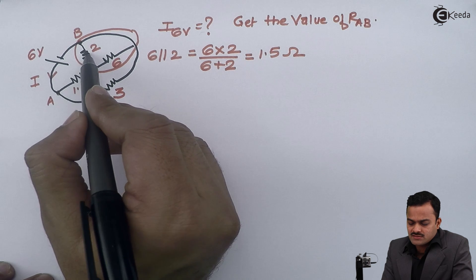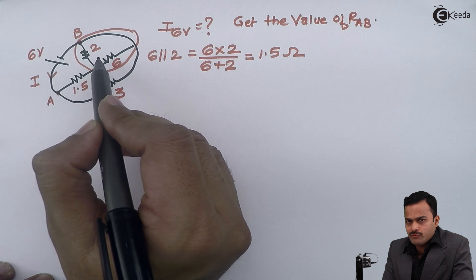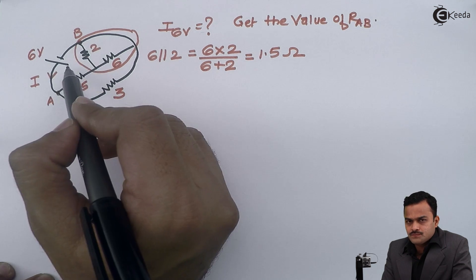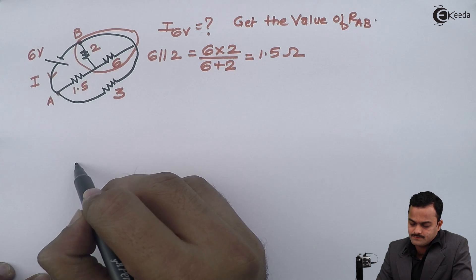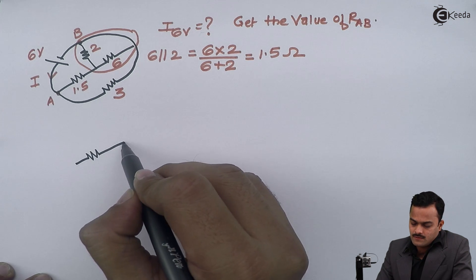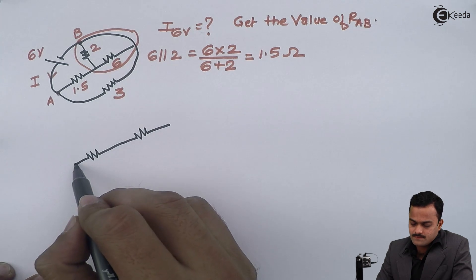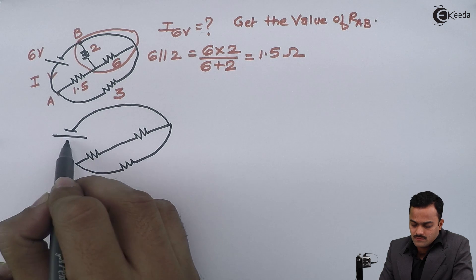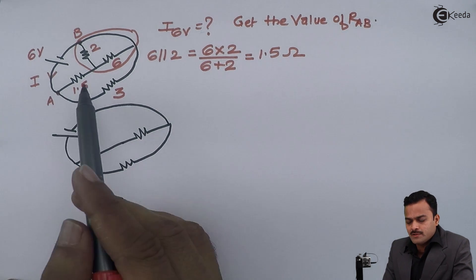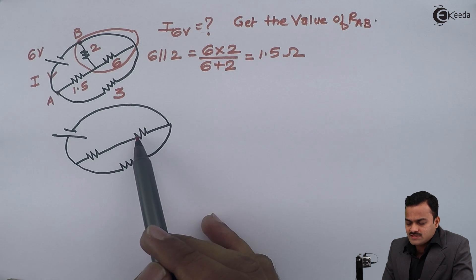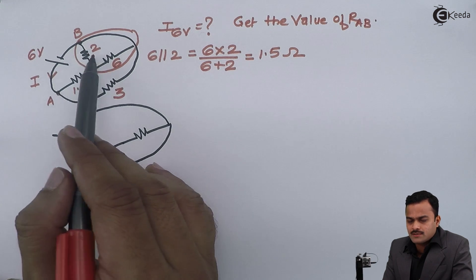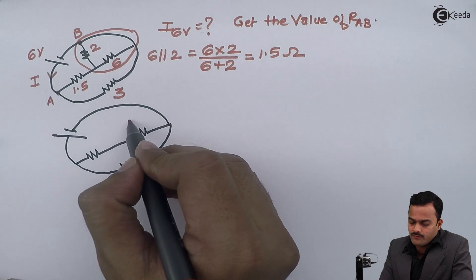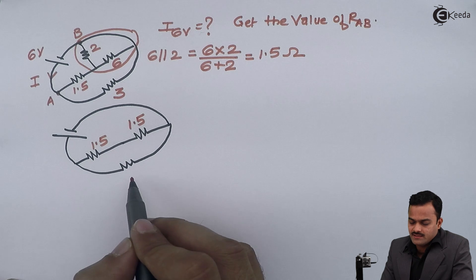Whenever two resistors are in parallel because they form a loop, when drawing the equivalent circuit, one of the resistors is removed. I will remove this 2 ohm. In the redrawn circuit, the 1.5 ohm equivalent replaces it, and the 3 ohm remains as it is — the rest of the circuit does not change. So out of the 2 ohm and 6 ohm, I remove the 2 ohm and draw the equivalent as 1.5 ohm.